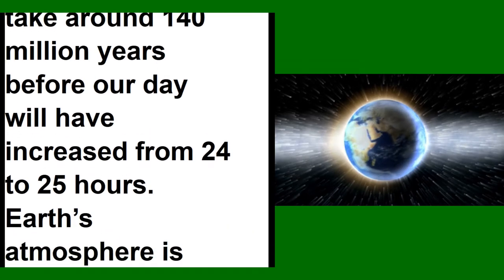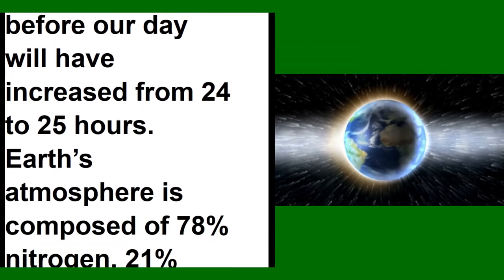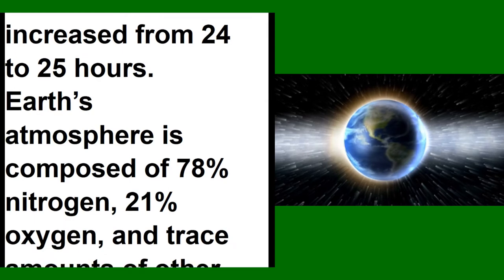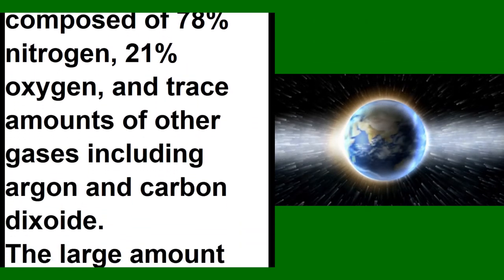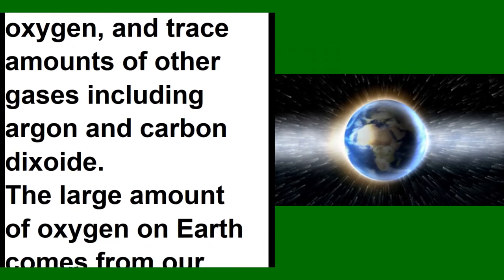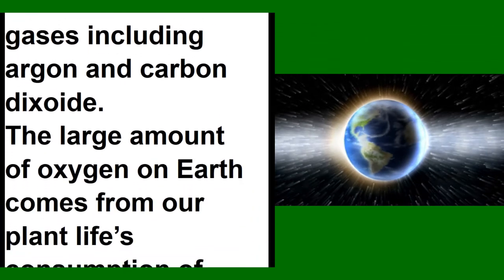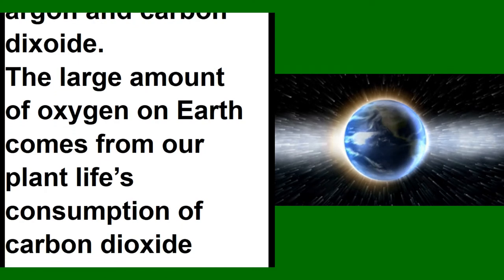Earth's atmosphere is composed of 78% nitrogen, 21% oxygen, and trace amounts of other gases including argon and carbon dioxide. The large amount of oxygen comes from plant life's consumption of carbon dioxide during photosynthesis.